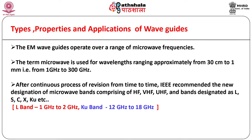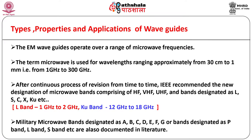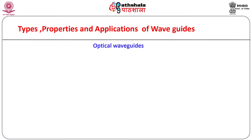After continuous revision over time, the Institute of Electrical and Electronics Engineers (IEEE) recommended new designation of microwave bands comprising HF (high frequency), VHF (very high frequency), UHF (ultra high frequency), and bands designated as L, S, C, X, KU, etc. Besides this, we can find military microwave bands designated as A, B, C, D, E, F, G, or bands designated as P band, L band, S band, etc., all documented in literature.